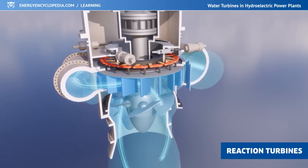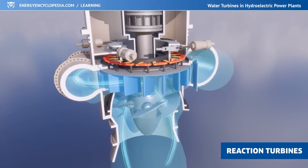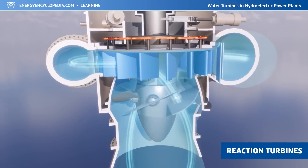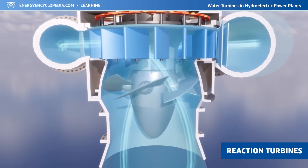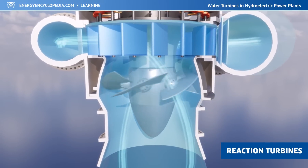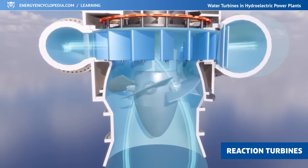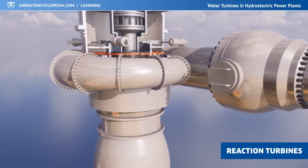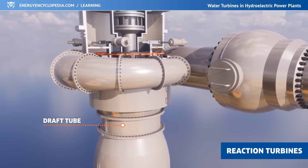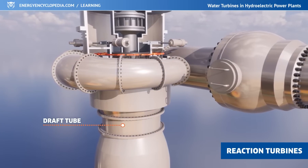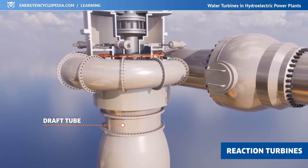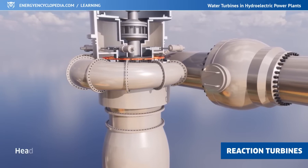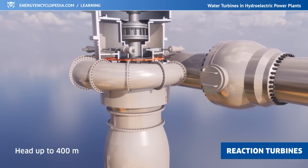In reaction turbines, part of the pressure energy of water changes to kinetic energy as it passes through the turbine, which is transferred to the rotor. Due to the changing pressure, these turbines must be enclosed and their outlet is usually connected to a draft tube so that the entire height difference, or head, can be utilized. Reaction turbines can be used for a head of up to 400 meters.